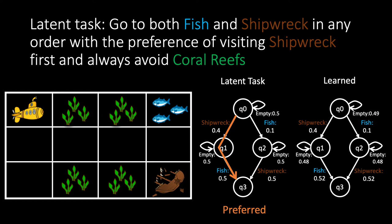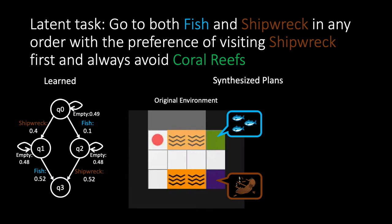Then, using the learned PDFA, we synthesize a plan on the original environment. The resulting path takes the preference into account and visits the shipwreck first and then the fish.